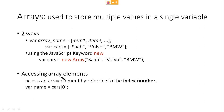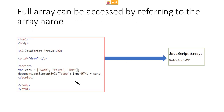How to access the array elements? Just like you see, we use the index number to access array elements. That is, cars[0] means Saab, cars[1] means Volvo, cars[2] means BMW. Here, the indexing always starts from zero, just like in C programming language.